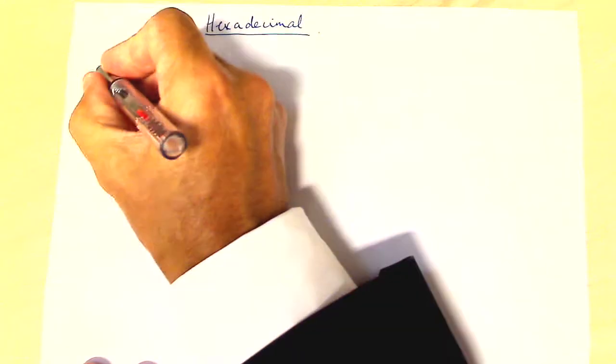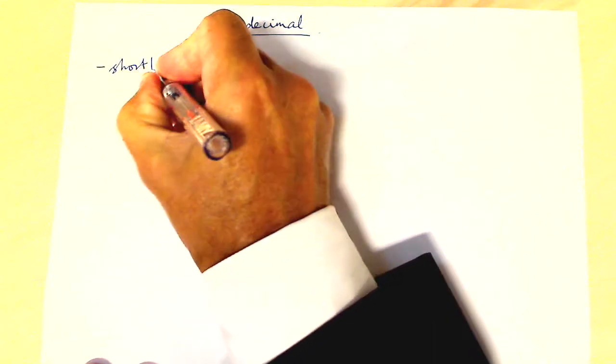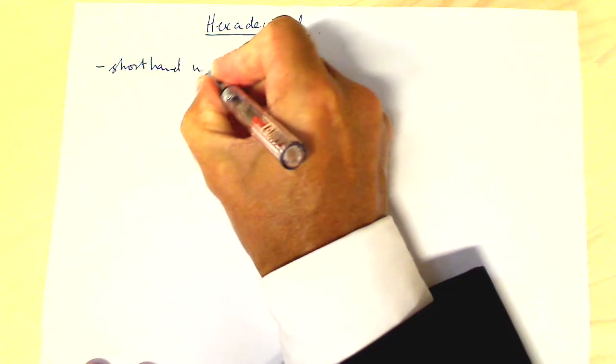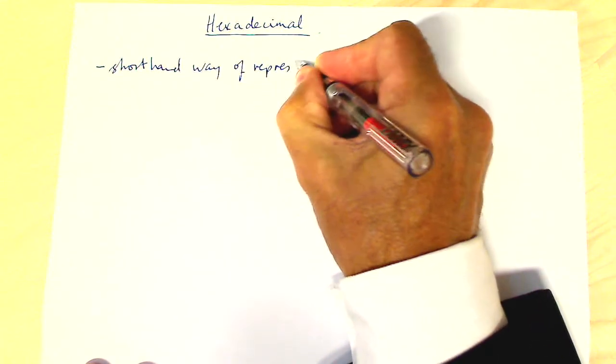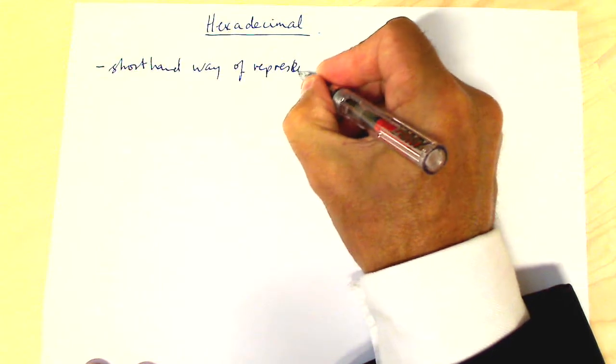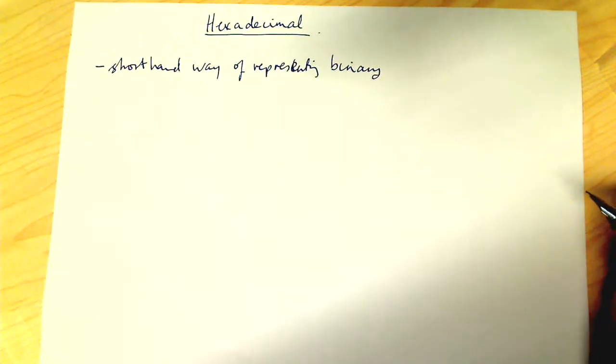The important thing to remember is that hexadecimal is actually only a shorthand way of representing binary. So it's not actually really different than binary, it's just a different way of representing binary.